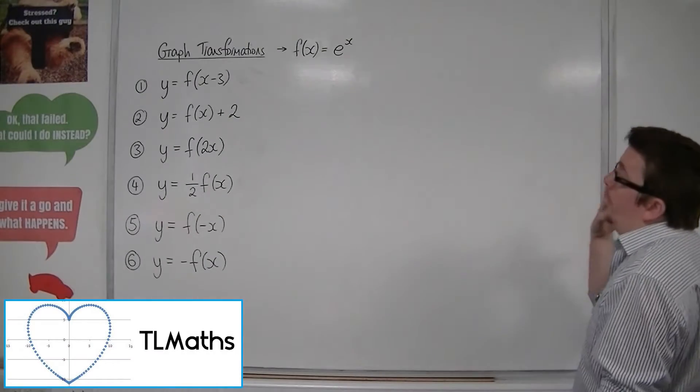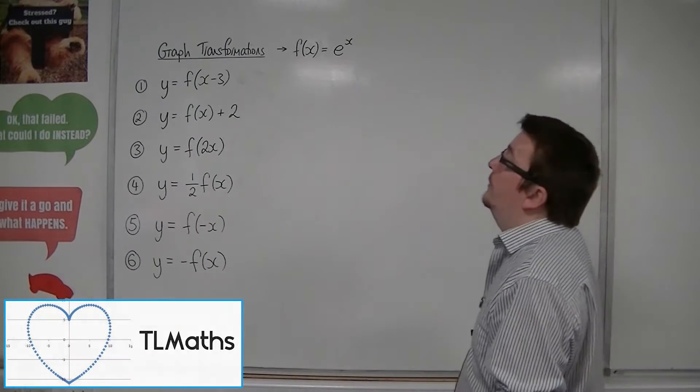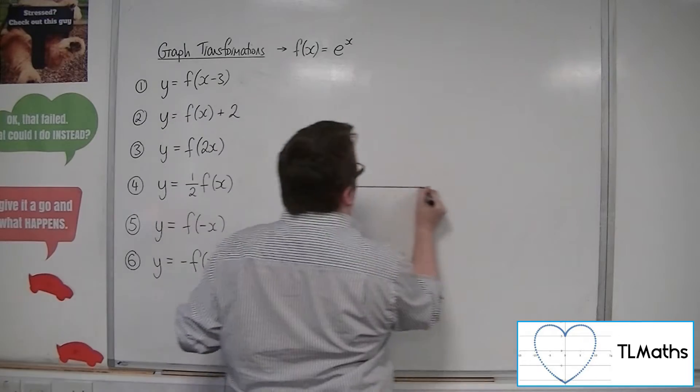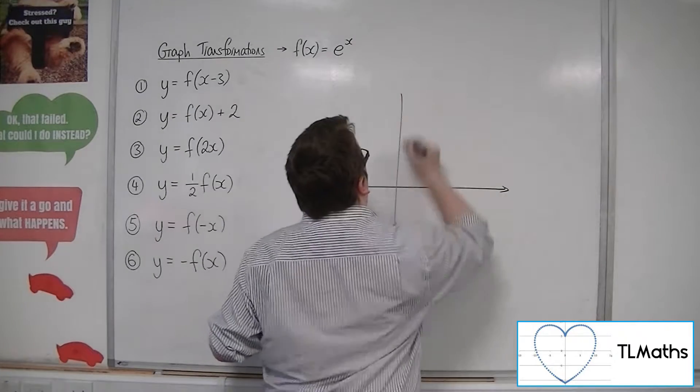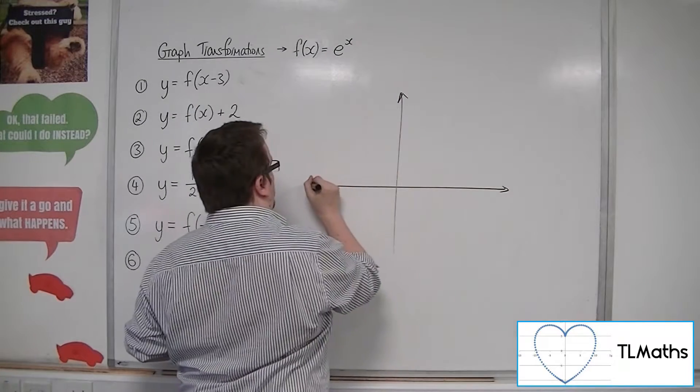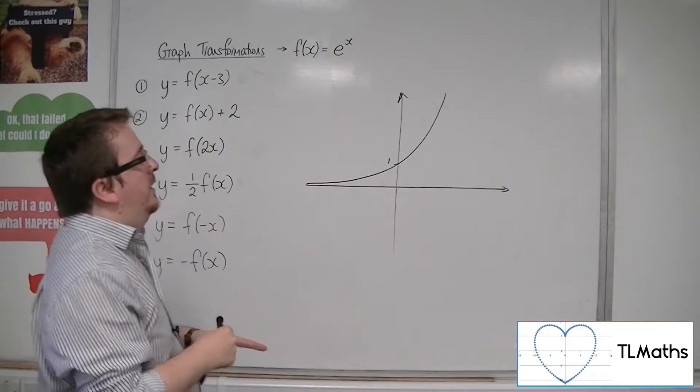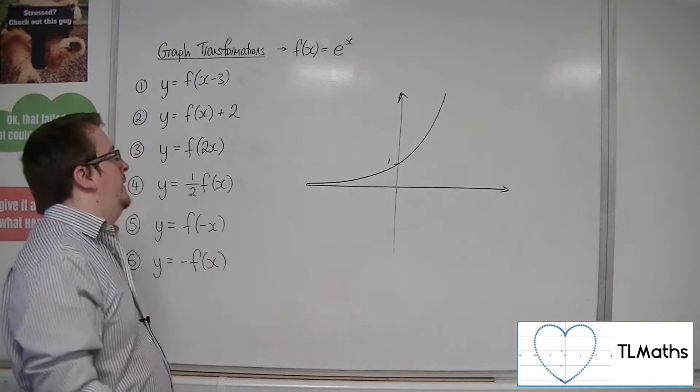So we're now going to look at f of x equals e to the x. So remind ourselves what e to the x looks like. Going through 1 on the y-axis. So that's your f of x equals e to the x.